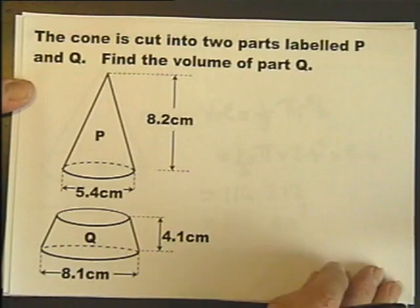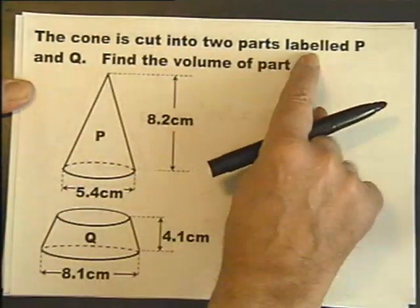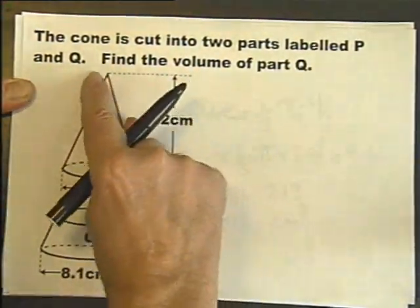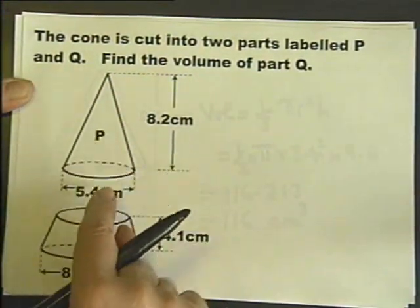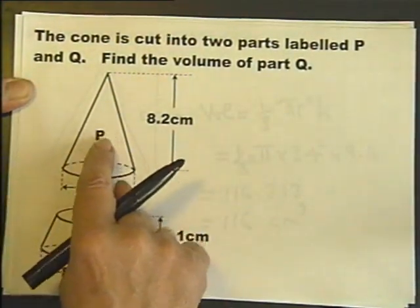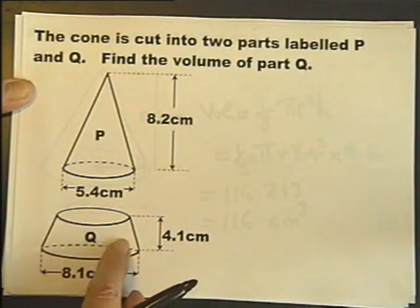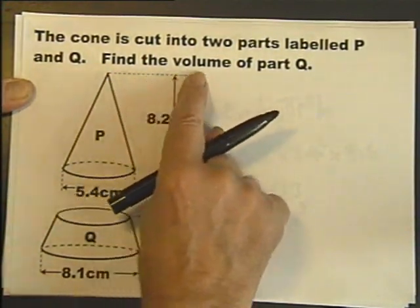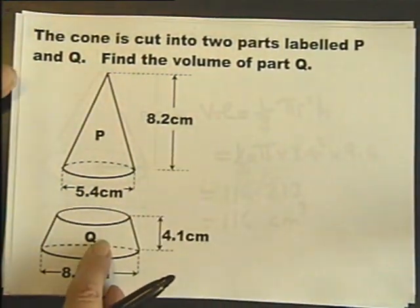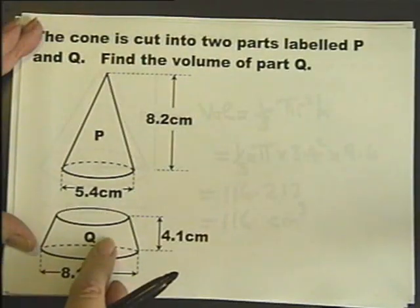And the last question. The cone is cut into two parts, labeled P and Q. So this is a large cone, been chopped, so you've got a top bit and a bottom bit. That's still a cone, this is actually called a frustum of a cone. And it says, find the volume of part Q. In other words, find the volume of the frustum of the cone.